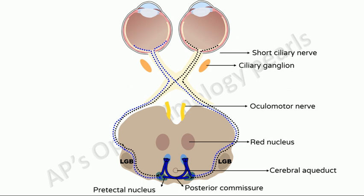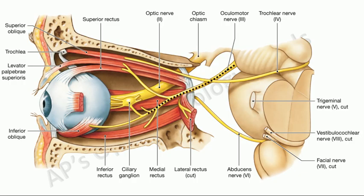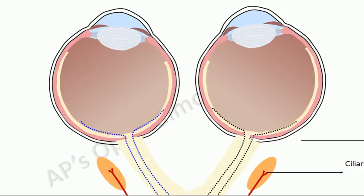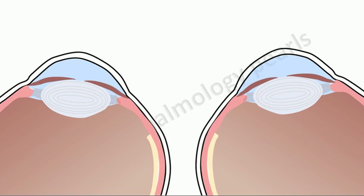Pre-ganglionic parasympathetic fibers originate in the Edinger-Westphal nuclei and travel in the ipsilateral oculomotor nerve, continuing in its inferior branch to the nerve to the inferior oblique. From here, fibers travel in an offshoot of the nerve to inferior oblique to enter and synapse in the ipsilateral ciliary ganglion. Post-ganglionic fibers from the ciliary ganglion travel via the short ciliary nerves, pierce the globe adjacent to the optic nerve, travel in the suprachoroidal space, and supply the iris to produce pupillary constriction. Notably, these post-ganglionic fibers are the only parasympathetic post-ganglionic fibers in the body to be myelinated, possibly because of the need for a rapid response. The fibers to the sphincter constitute only three to five percent of these fibers; all others supply the ciliary muscle.